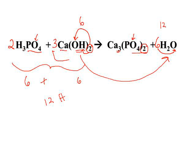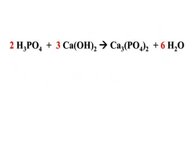If we double-check our reaction, we've got six hydrogens plus three times two equals six hydrogens to give us twelve hydrogens on each side, two phosphates and two phosphates, three calciums and three calciums, and our three times two or six oxygens and six oxygens are balanced.